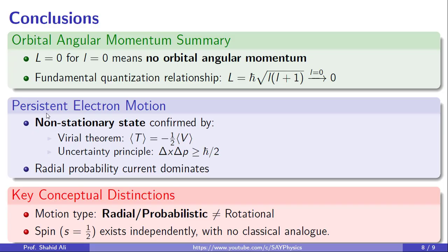Finally, let us make some key conceptual distinctions. The motion we are talking about here is radial and probabilistic, not classical, not rotational. And don't forget the role of spin. Even when L equal to zero, the electron still has spin angular momentum s equals half. This spin exists independently of orbital motion and has no classical analogy. So in short, L equal to zero means no orbital rotation, but the quantum world is never static. The electron is still dynamically active, just in a fundamentally non-classical way.